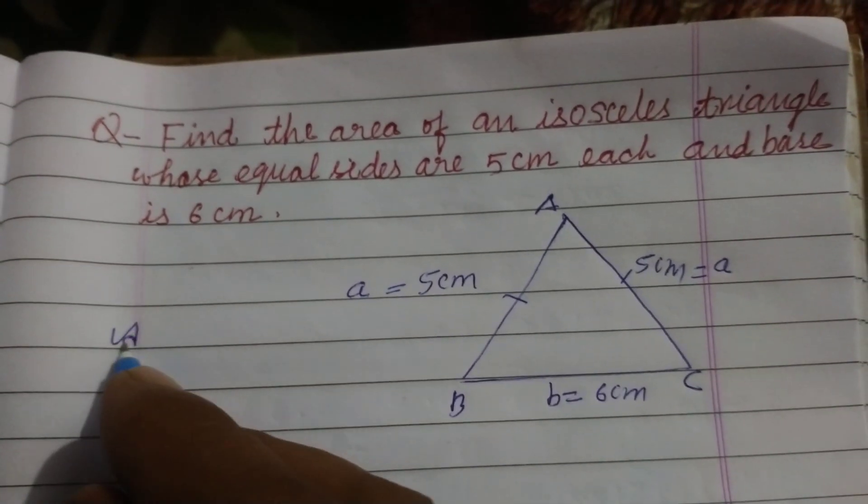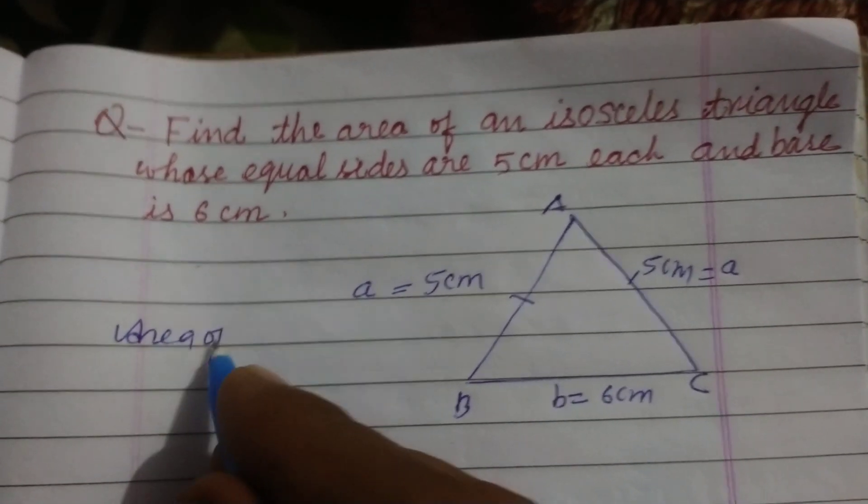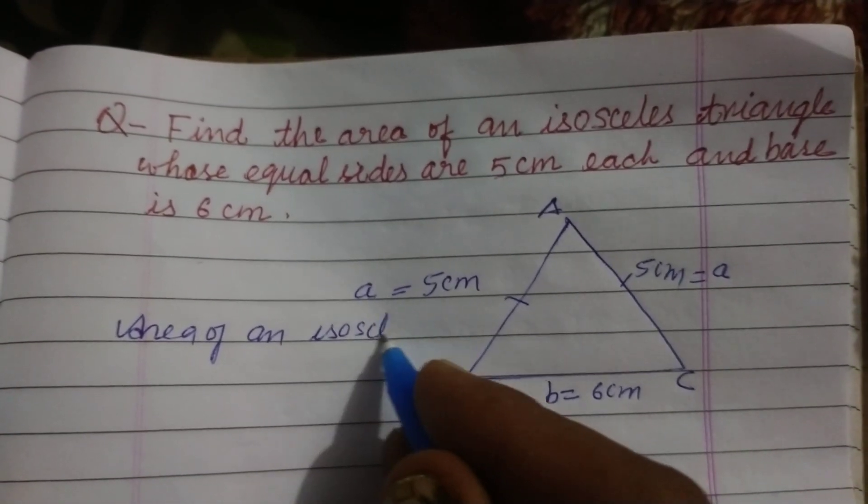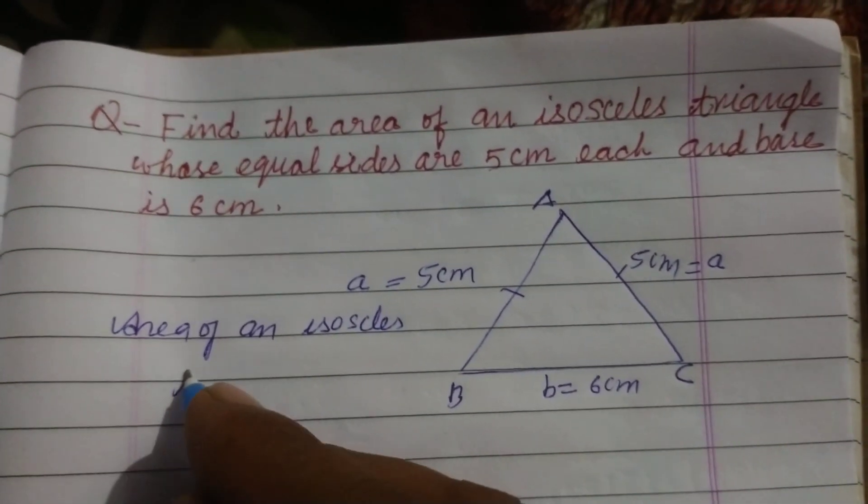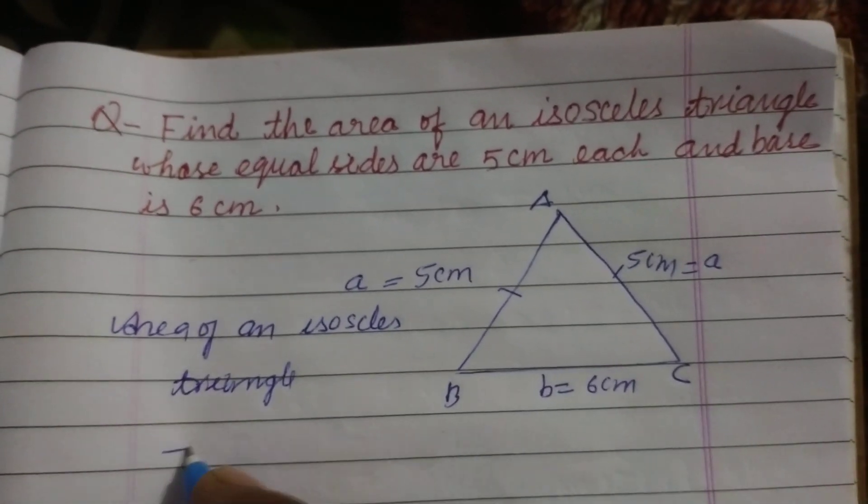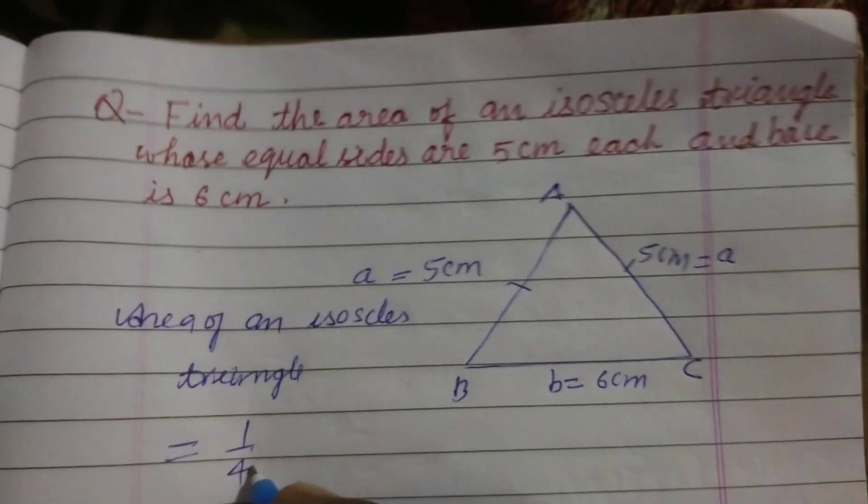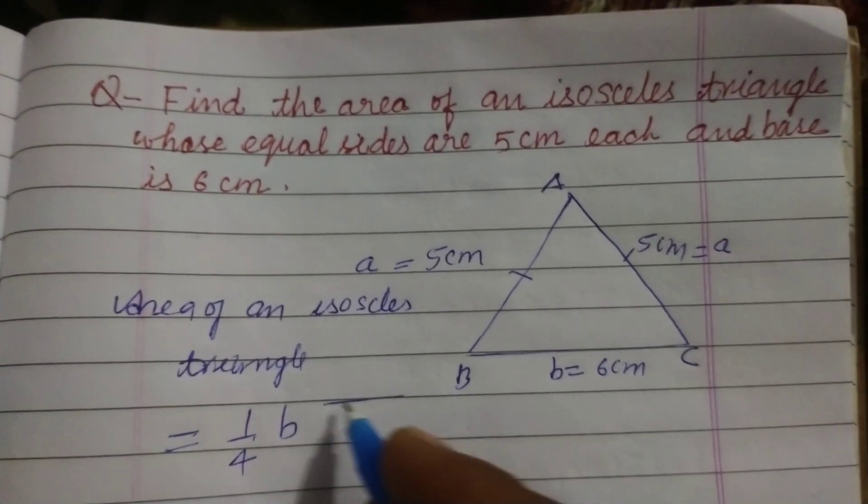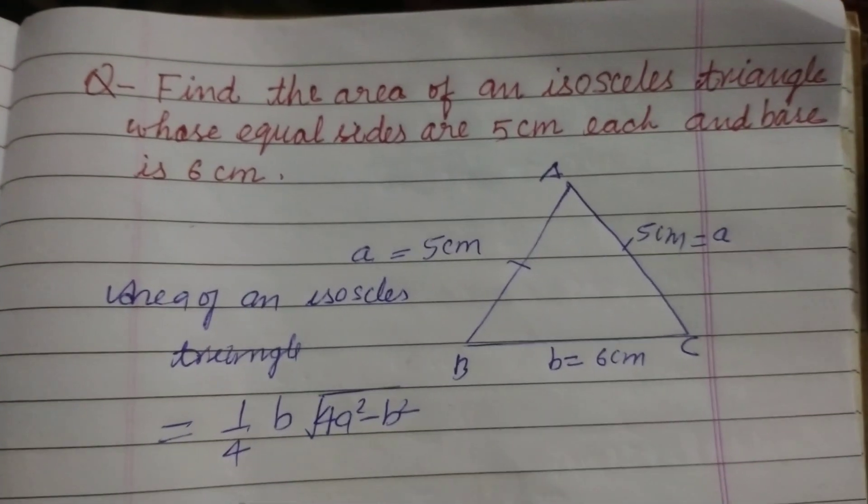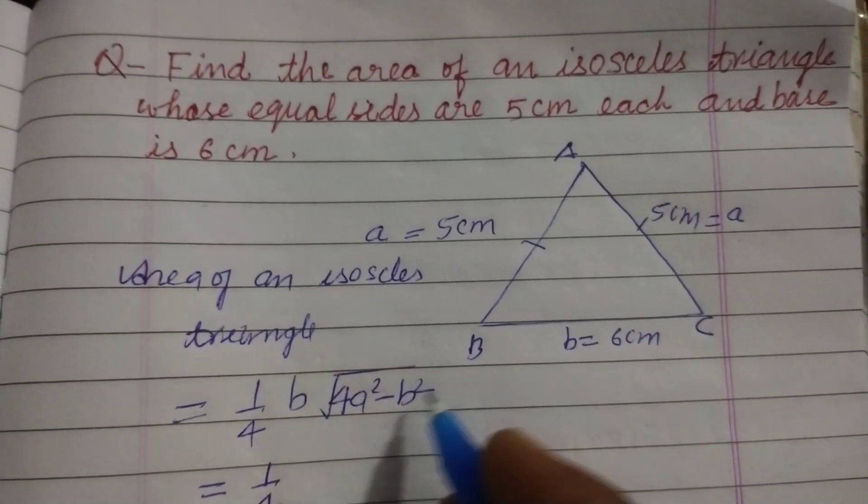So area of an isosceles triangle is equal to 1/4 * B * sqrt(4A² - B²). So 1/4.